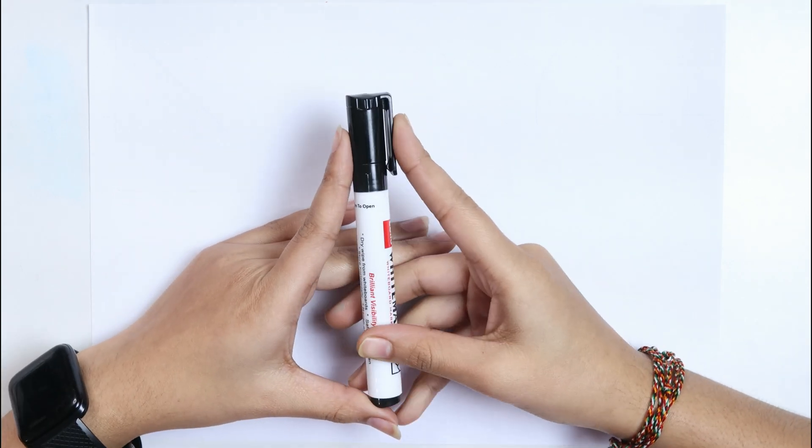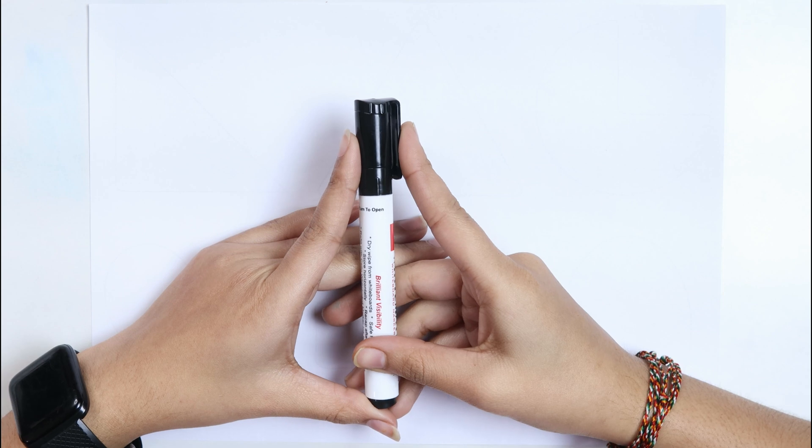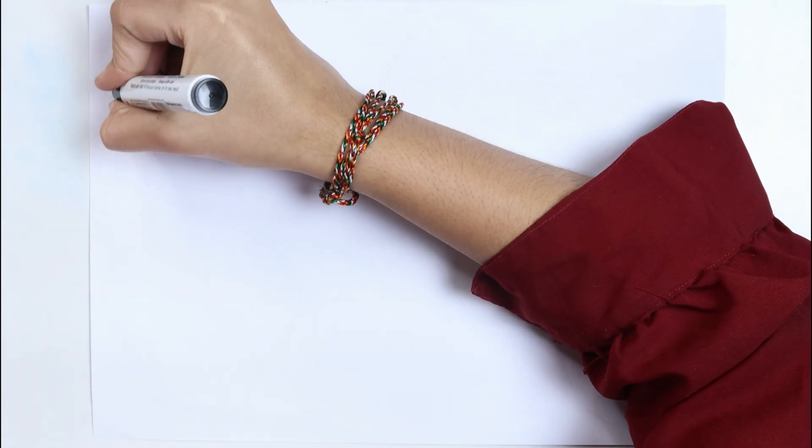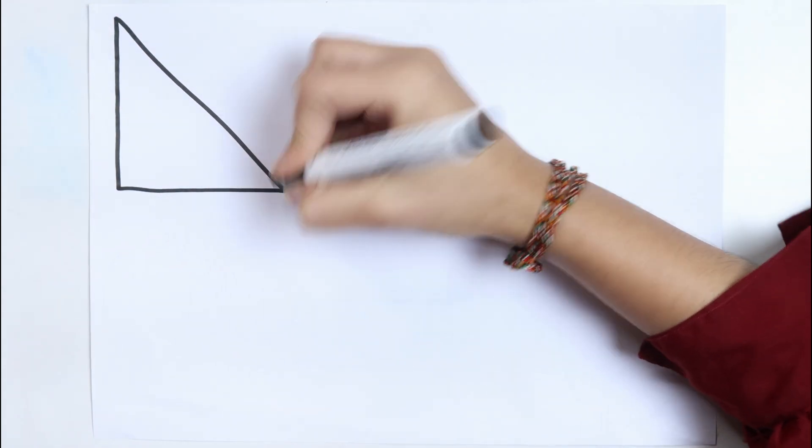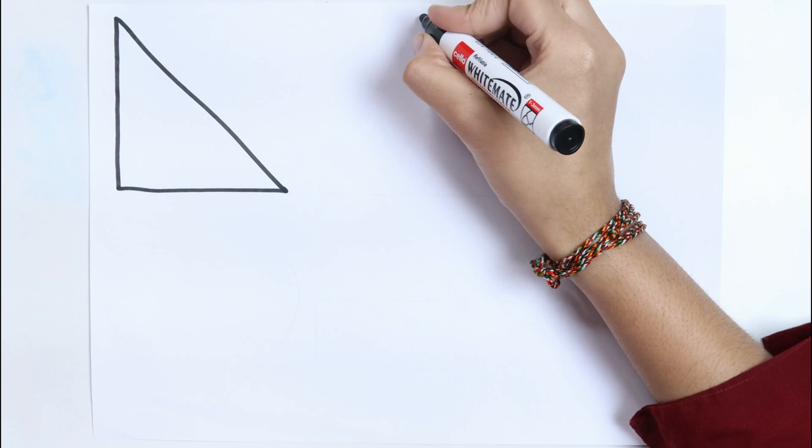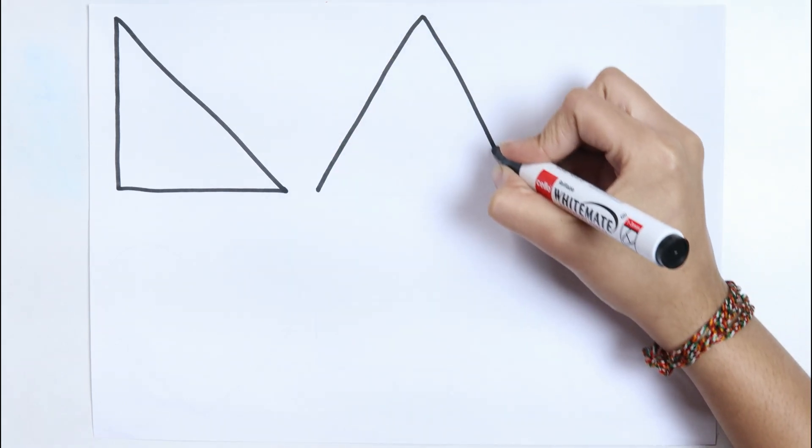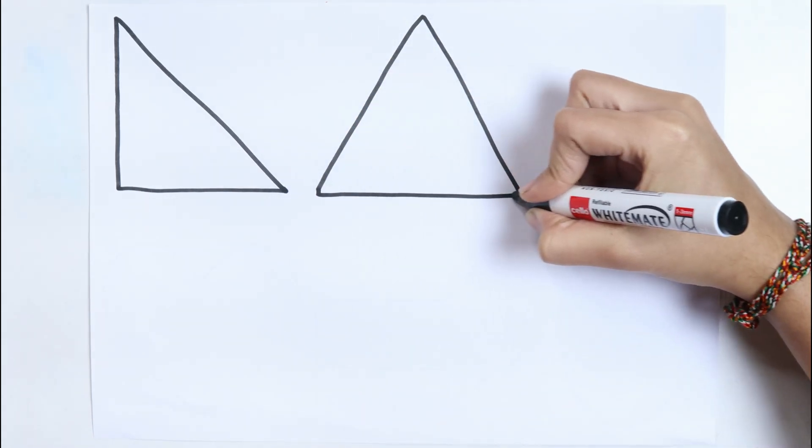This is the black color. Which color kids? This is the black color. Right triangle. Triangle.